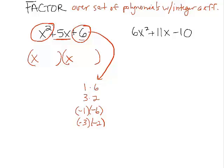Let's think about how we would get that 5x. The x times x gets us the x squared, and whatever goes here and here will get us the 6. It's when we multiply the outsides and the insides that get us that x term,